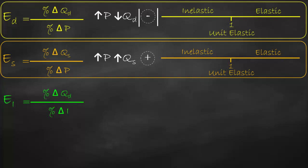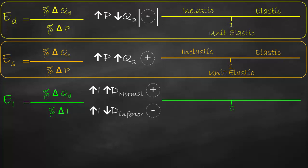The formula for income elasticity is percent change in quantity demanded divided by percent change in income. If income goes up and the good is a normal good, demand will be higher — a positive relationship. But if income goes up and the good is an inferior good, demand goes down — a negative relationship.